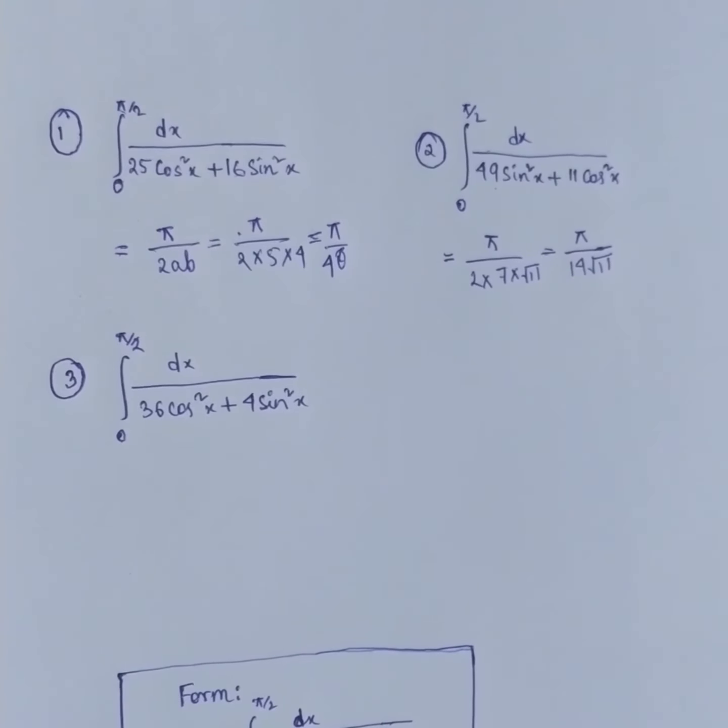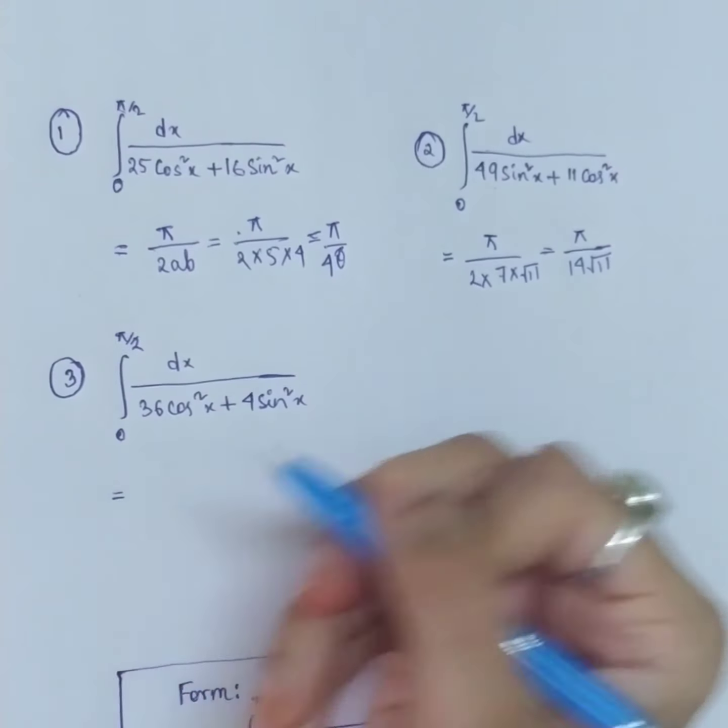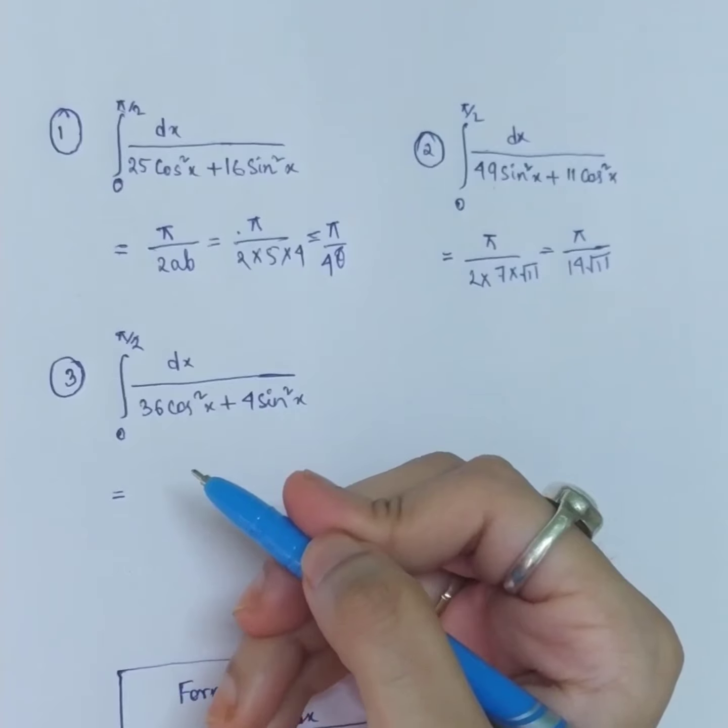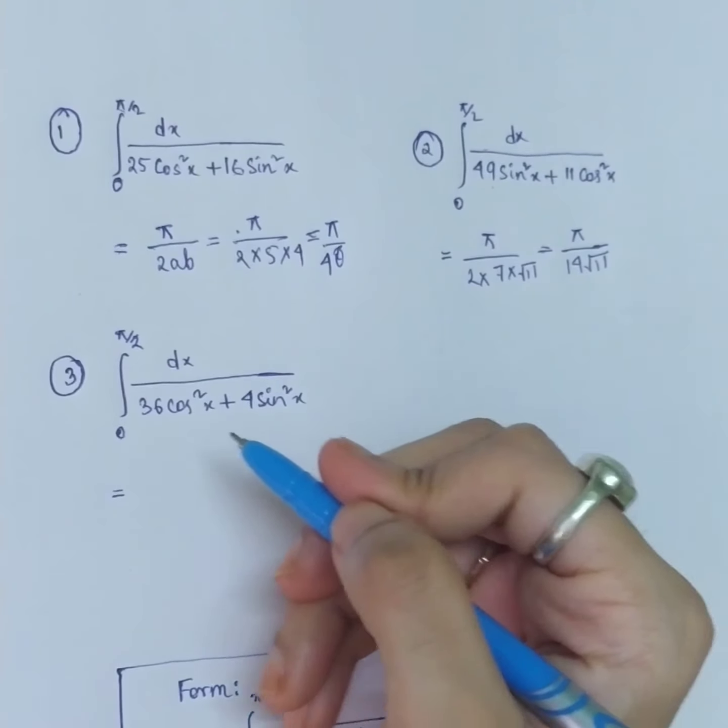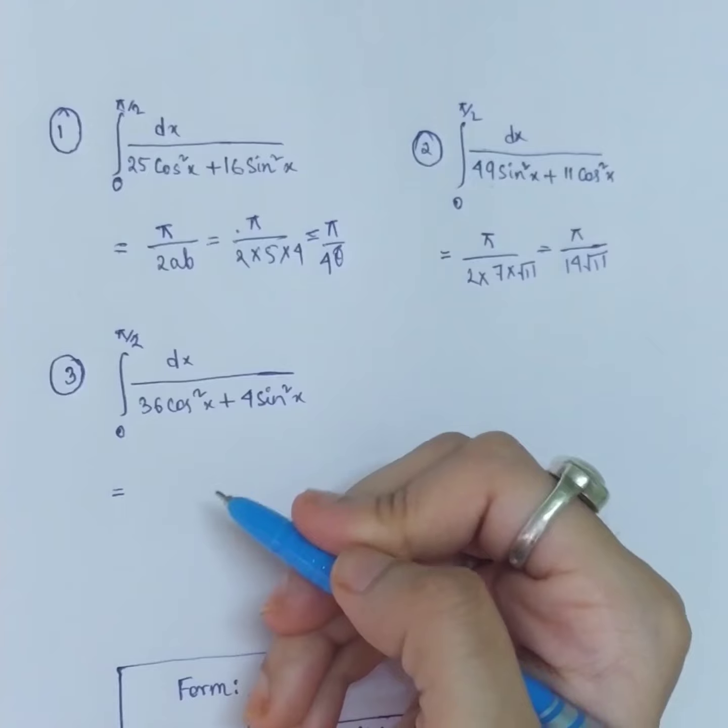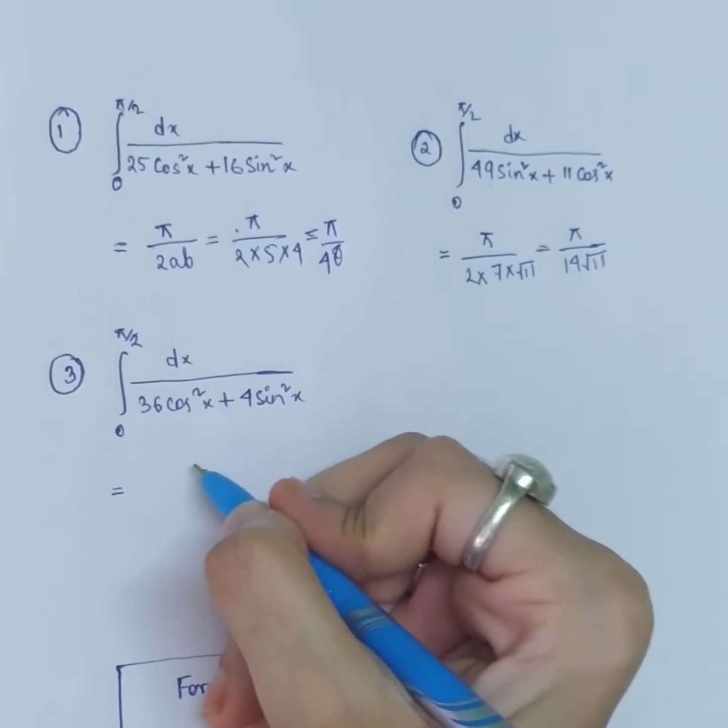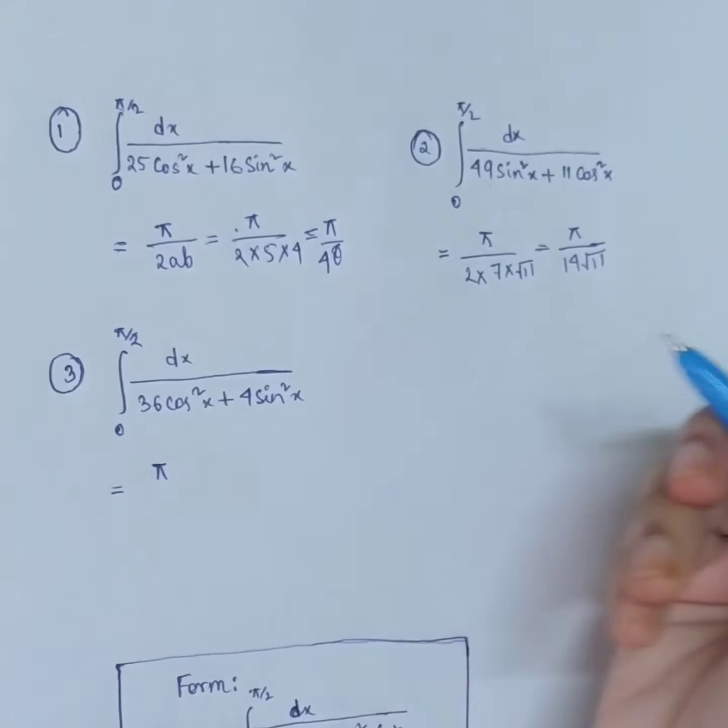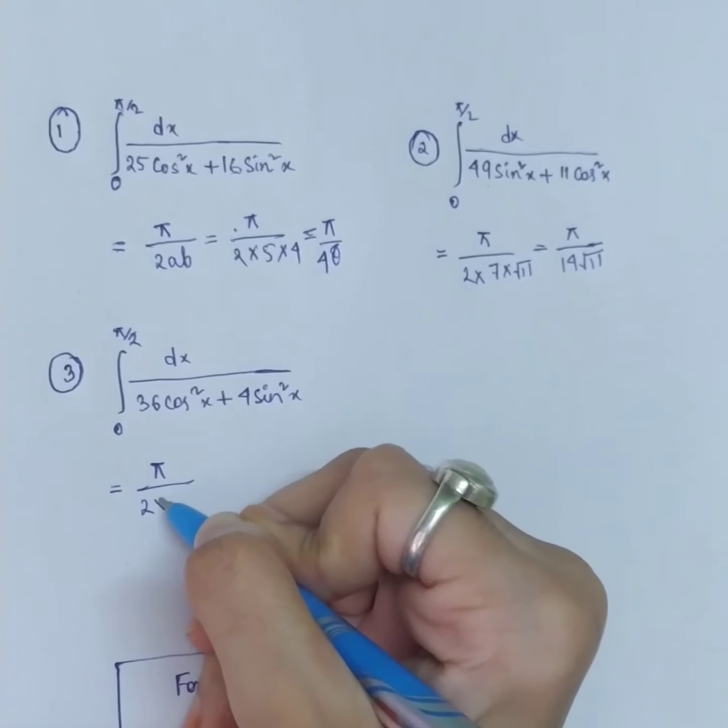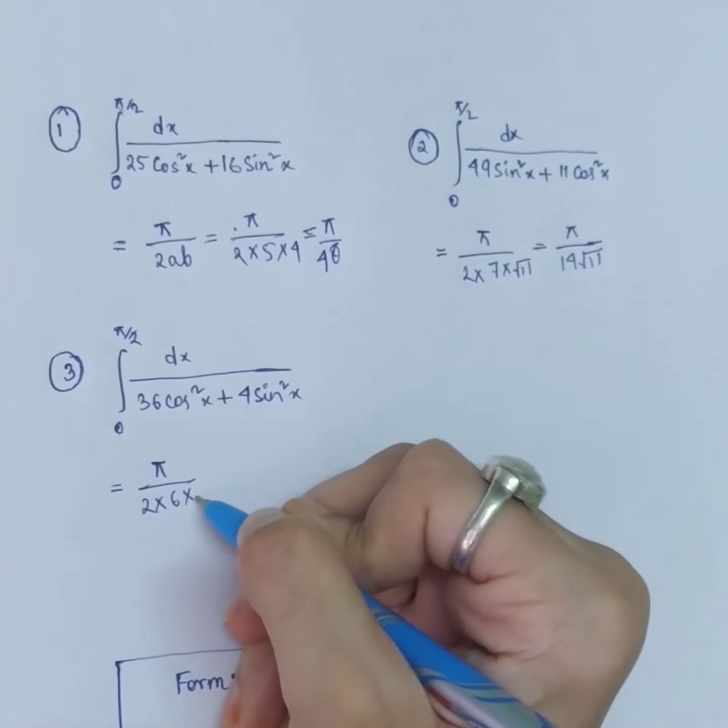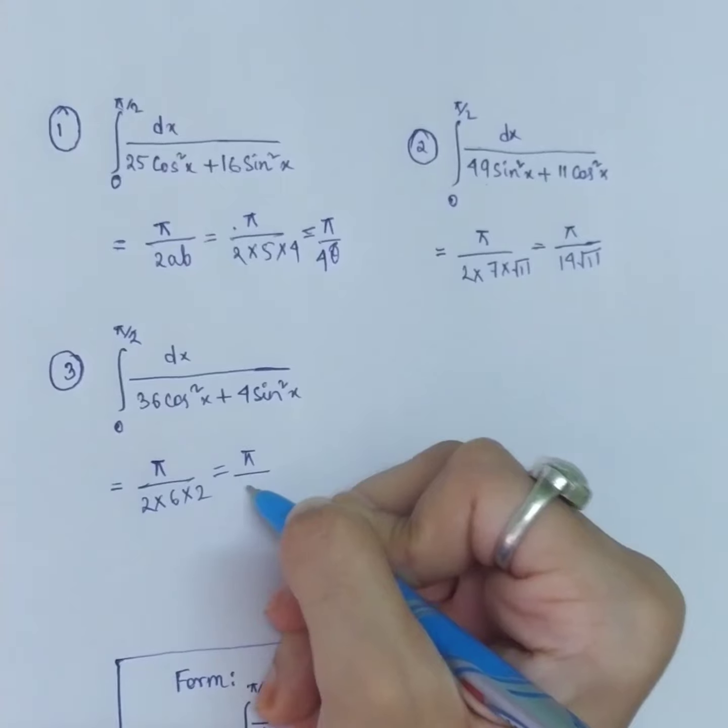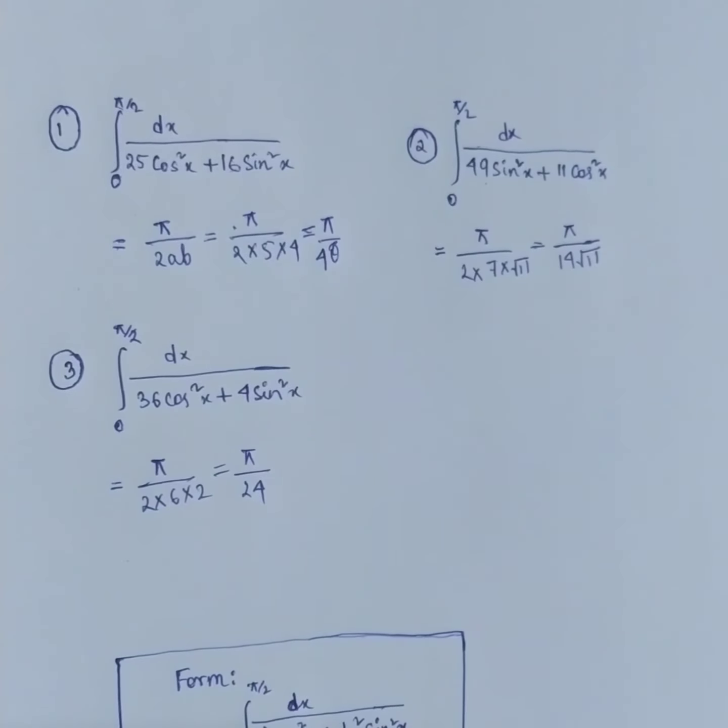Now coming to our last question. Here you can see, a² = 36, b² = 4. So here a is 6 and b is 2. So what will be your formula? π/(2×6×2), which will be π/24. That's it!